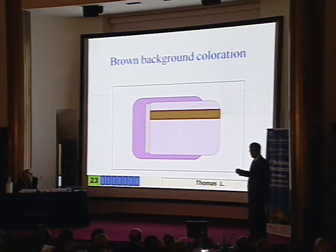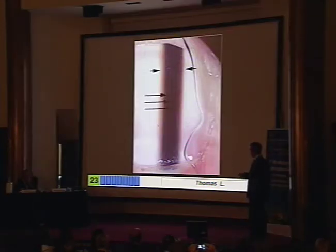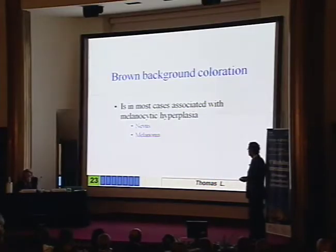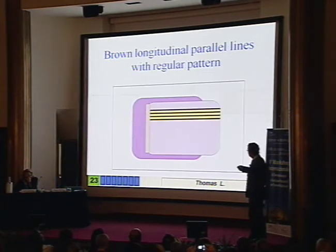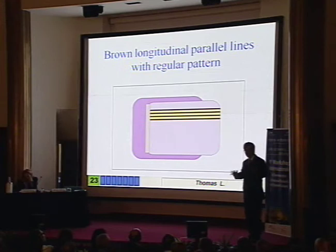When you look at the band, if it has a brown background, it's in favor of melanocytic hyperplasia. This brown background is overlaid by longitudinal bands. And if you have this brown color, it's in favor of either a nevus or melanoma — hyperplasia of melanocytes in the nail matrix. Overlying these brown bands, you have longitudinal lines, and these longitudinal lines can be either regular or irregular.